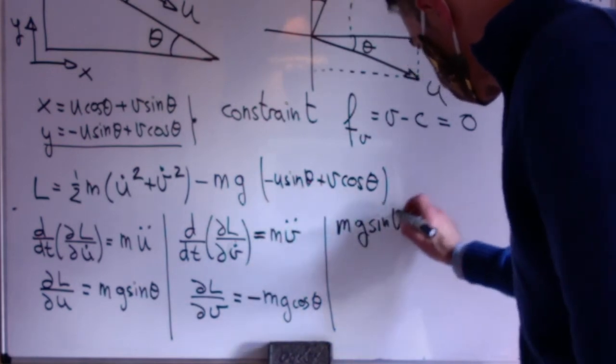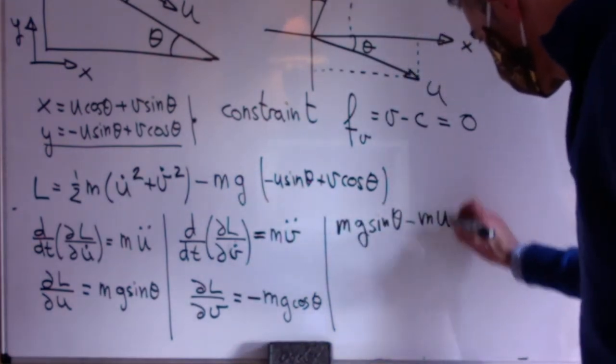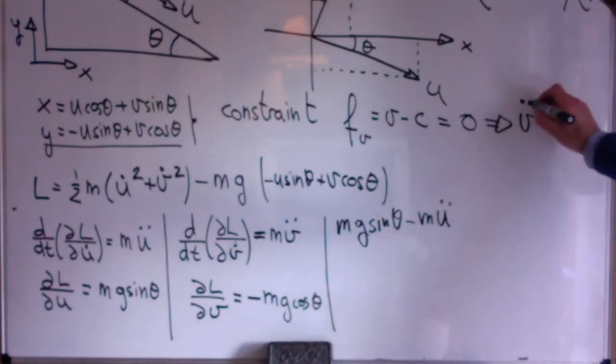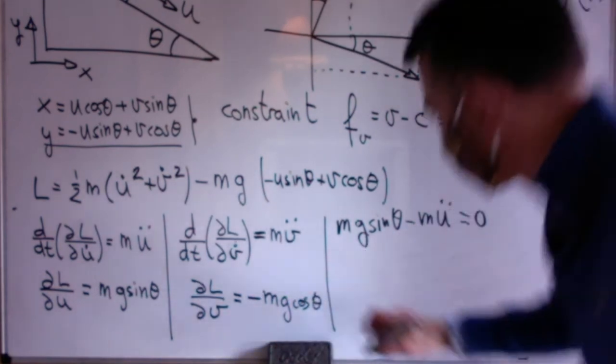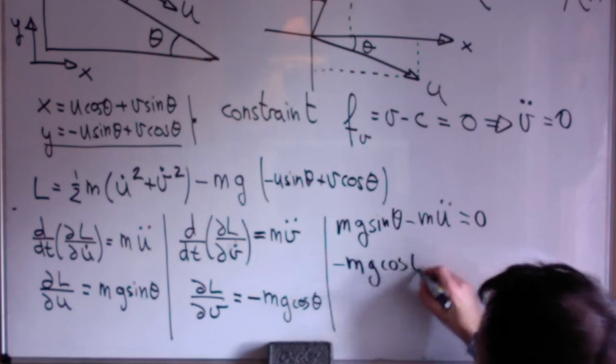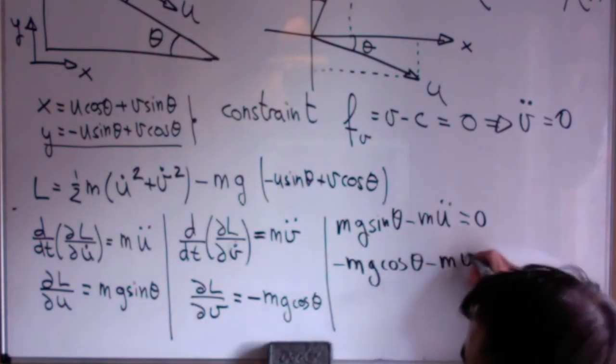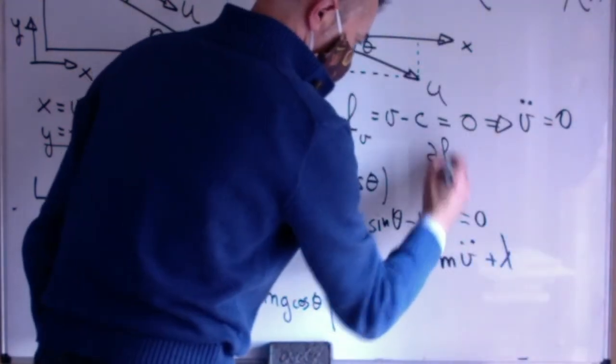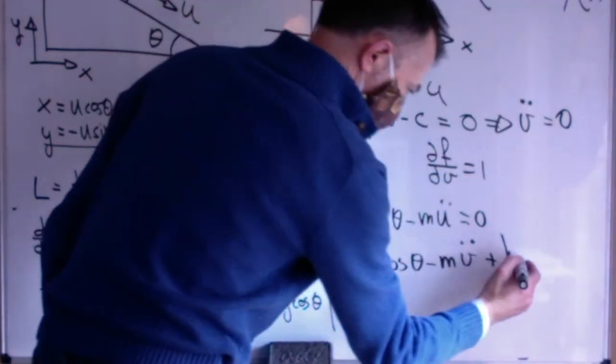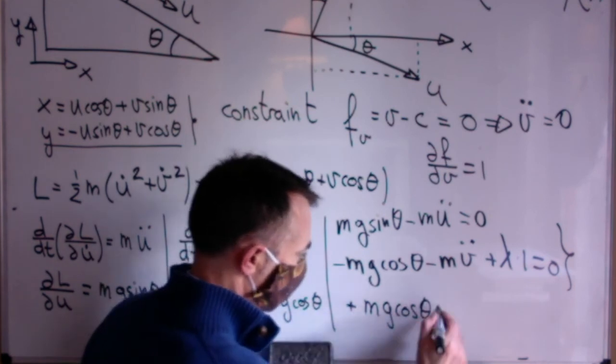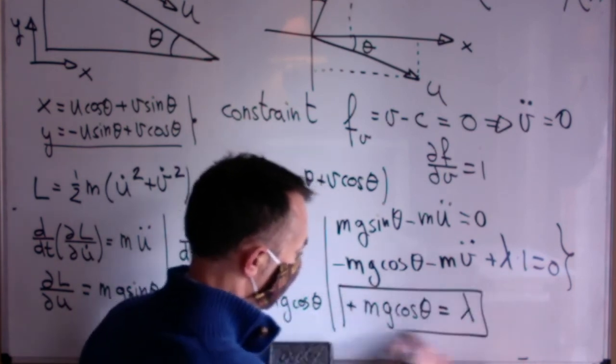When it comes to Lagrange's multipliers, because the constraint only depends on v, there will only be one multiplier in the direction of the coordinate v. Now I apply the constraint, so v double dot is 0, and get these two equations.